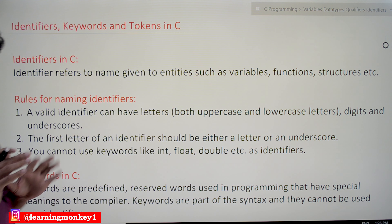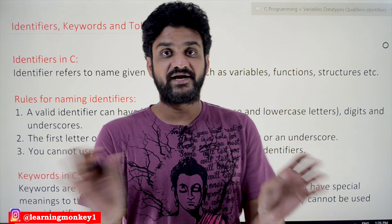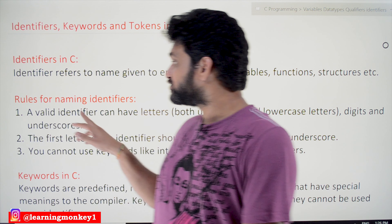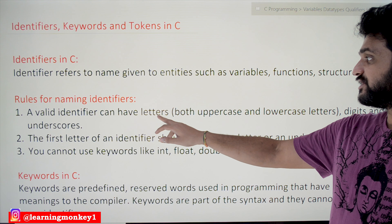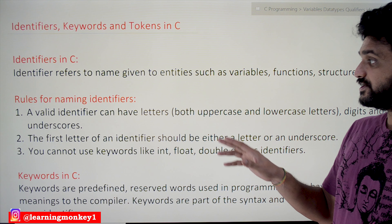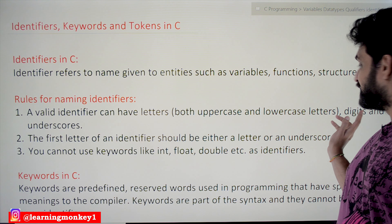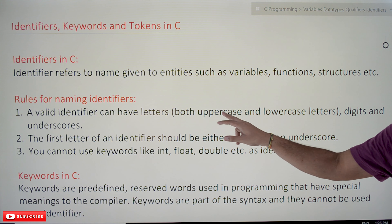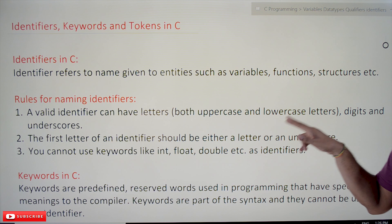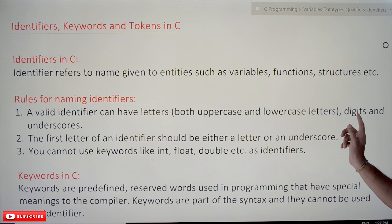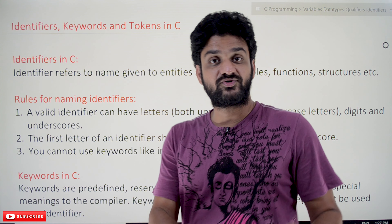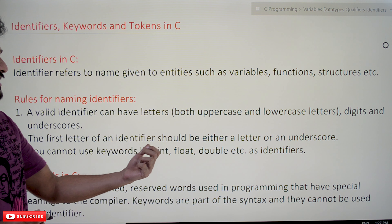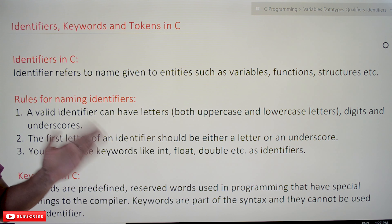Next, let's look at the rules for creating identifiers. There are some rules beyond which we cannot name variables, functions, or structures. A valid identifier can have letters — both uppercase and lowercase — digits 0 to 9, and underscores. So a valid identifier may contain uppercase letters, lowercase letters, digits from 0 to 9, and underscores are also allowed.